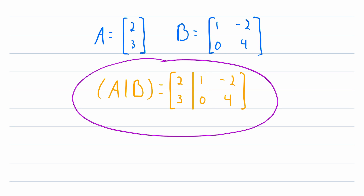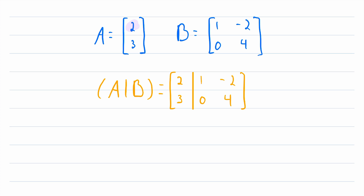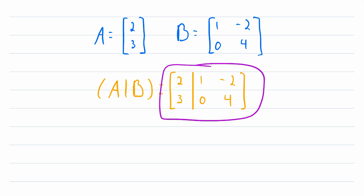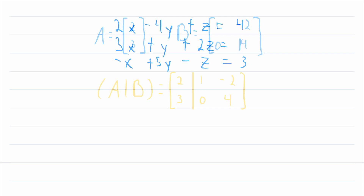The nice thing about an augmented matrix is that we can sort of operate on two matrices at the same time by doing things with just one matrix. And that might sound like a silly thing to do, but it's actually surprisingly useful. As we continue to do more complex calculations with matrices, augmented matrices will be useful a lot.